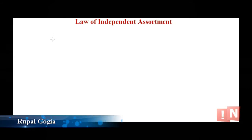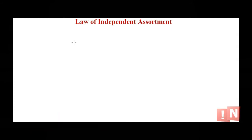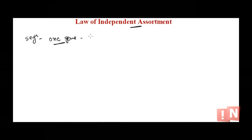Welcome back. In this video we are continuing with Mendel's laws of inheritance and we will talk about the law of independent assortment. It's beneficial if you have seen the first two laws. In the law of segregation, what Mendel studied was one gene at a time — one character at a time — and he saw how inheritance occurs with only one gene. In the first and second laws we talked about monohybrid crosses.